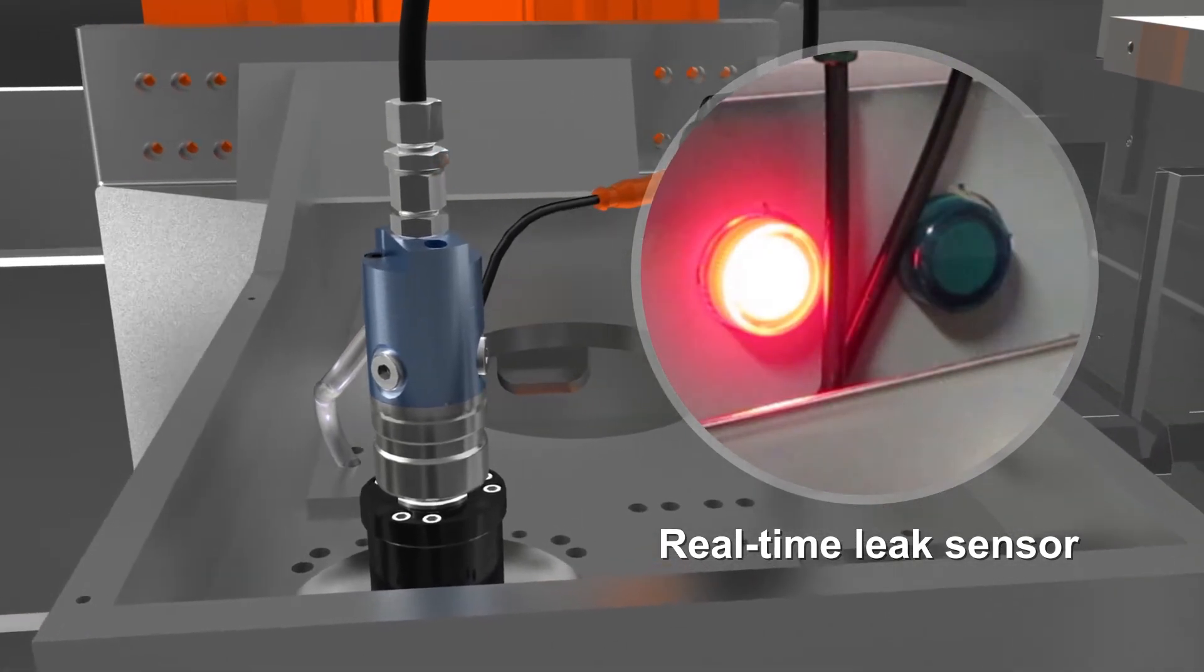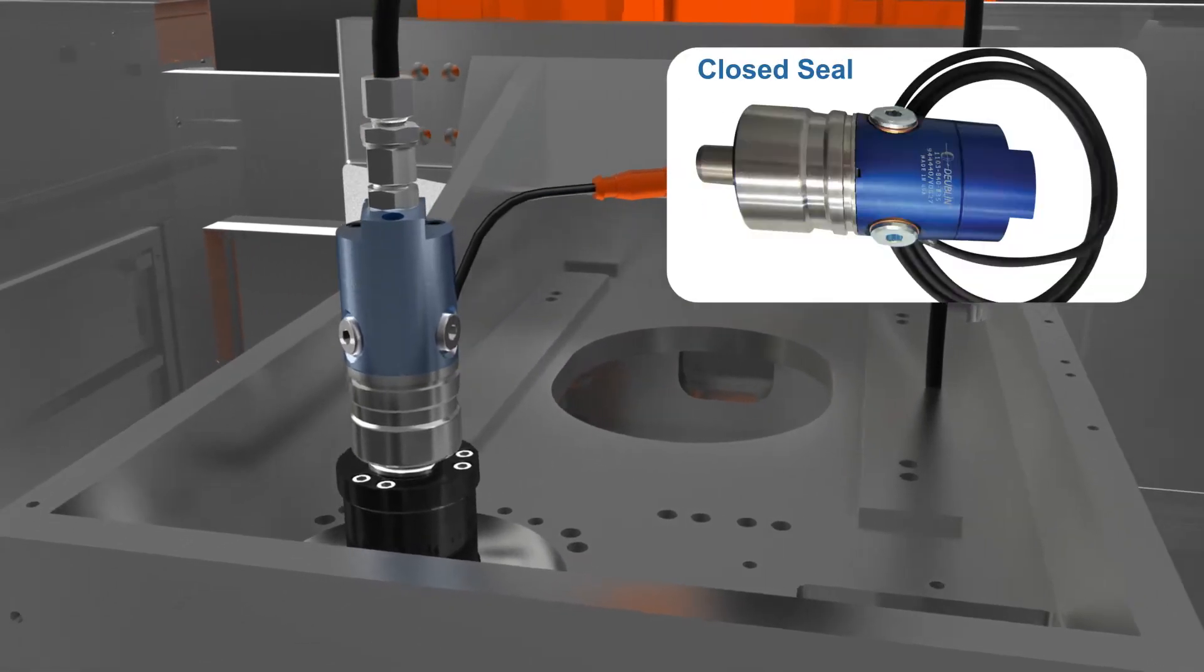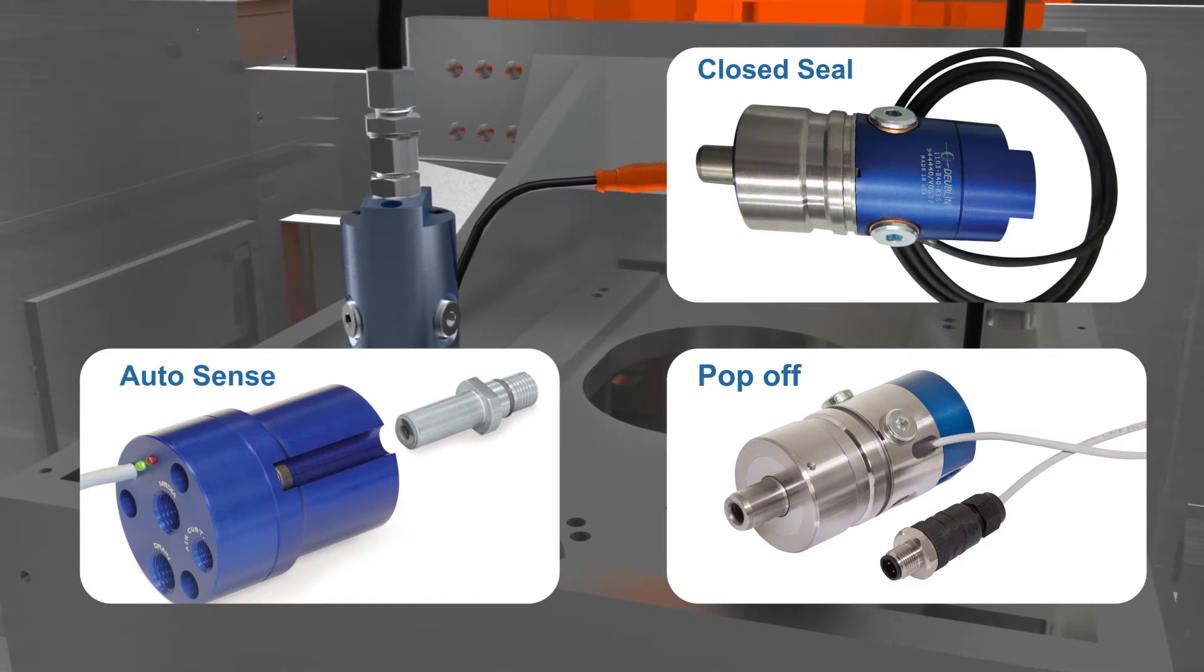The sensor is built directly into the rotary union and acknowledges that leaks on top of the sealing surfaces of closed seal, pop-off and auto-sense type Dublin seals are within normal operating conditions.